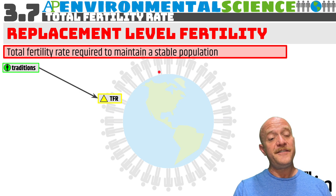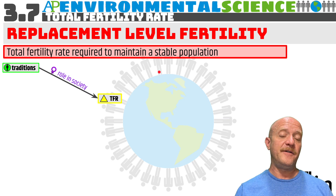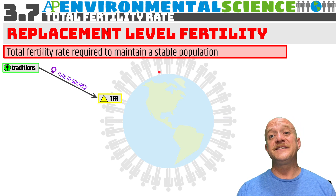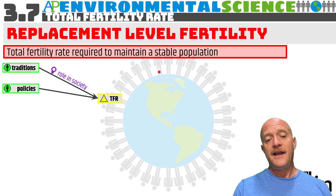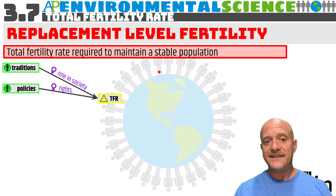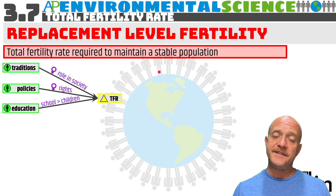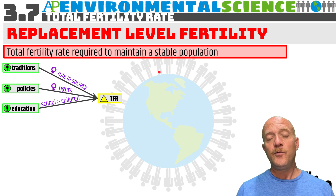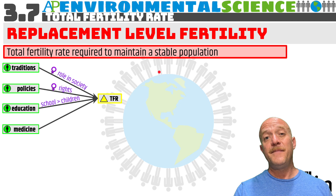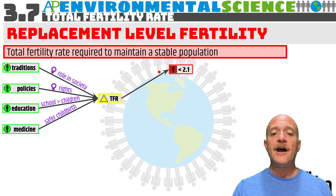There are different factors influencing this. In some countries, traditions may indicate a woman's role in society — where women have more of a nurturing role, they will probably have more children. If women are well-regarded and allowed to enter the workforce — in other words, if they have more rights — the total fertility rate will likely be smaller. If women are getting educated, school takes priority over children, so the TFR will also be lower. Finally, in countries where there have been medical advances, childbirths are safer and the total fertility rate will likely be reduced.